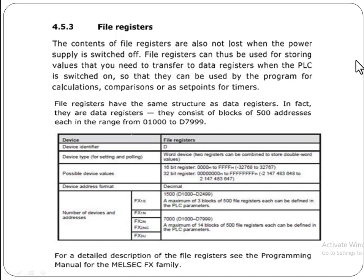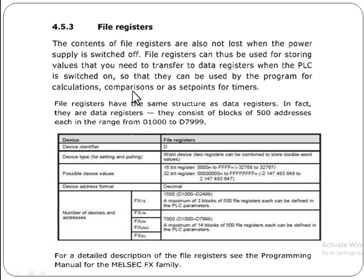File registers can thus be used for storing values that you need to transfer to data registers when the PLC is switched on. When the PLC is switched on, the values of the file registers are transferred to the data registers so that they can be used by the program for calculations, comparison, and as set points for timers.